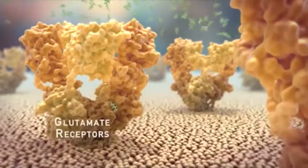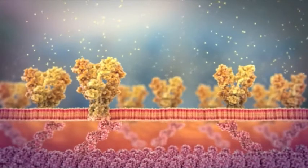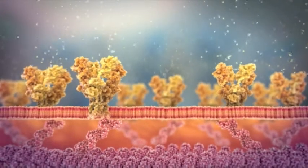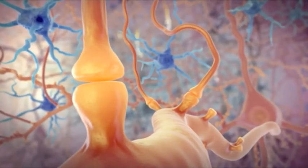They diffuse across the synapse and bind to glutamate receptors on the postsynaptic membrane. The activated receptor opens up, allowing ions to quickly pass through and pass the signal on to the next neuron.